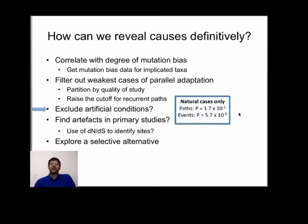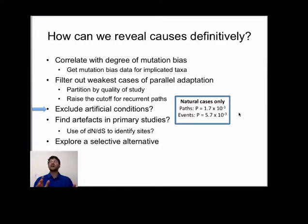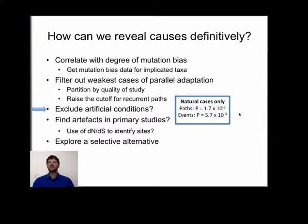I'd also like to point out that transition-transversion bias is significant in both natural and experimental studies. There are only five experimental studies out of 20, but they have lots of replicates so they tend to dominate the numbers. These studies can be seen as artificial in some ways, so it's interesting to take them out and see the effect. Among the natural cases only, we still see a transition-transversion bias, and it's still statistically significant. We'd also like to identify what kinds of analytical artifacts might be affecting the results, and suggestions are welcome.